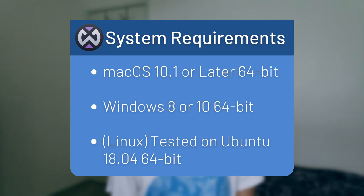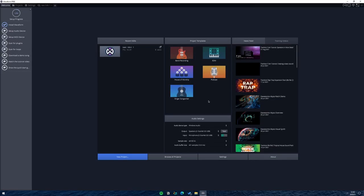The last DAW we're going to look at is called Waveform Free, which is made by Tracktion. There's a pro version and a free version, but we're just looking at the free version today. If you really enjoy the free version you're able to upgrade to the pro version at a pretty cheap price compared to other DAWs. It's available for Mac, Linux, and Windows. There are a lot of preset sounds and instruments that come with the program right out of the box, which is a big plus.